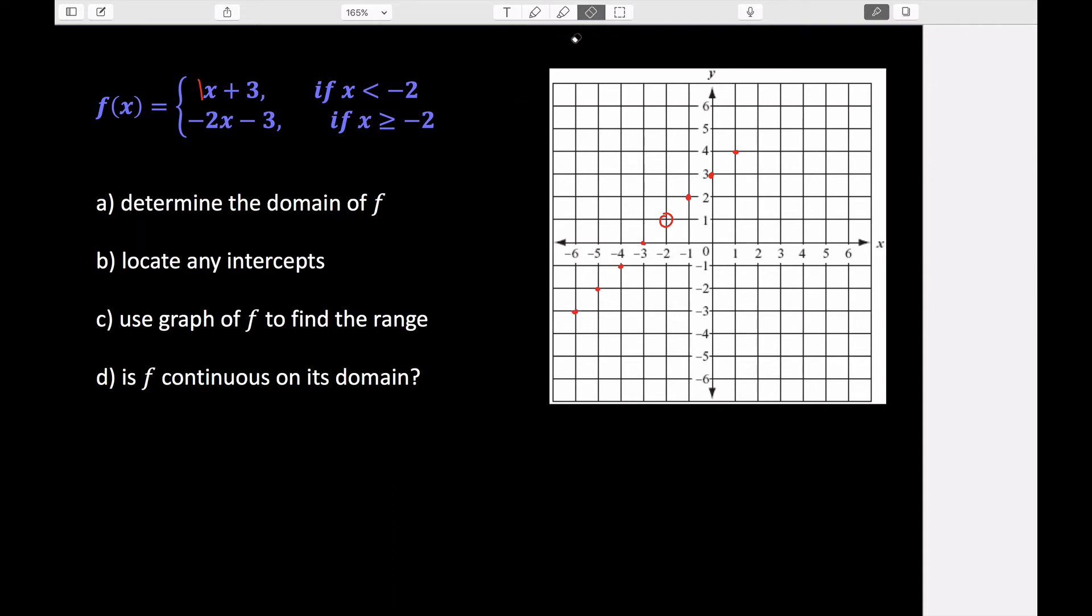But remember, we have to consider which of these points are within this restricted interval that we have. So we need all of the values that are less than negative 2. So all the values to the right of this open circle are not going to be included in this graph. But everything to the left of it is less than negative 2, so those all work.